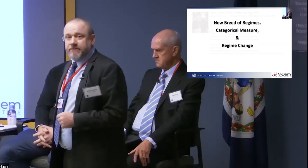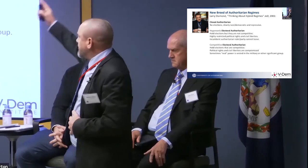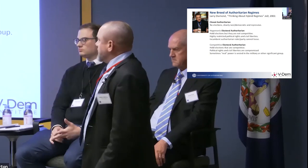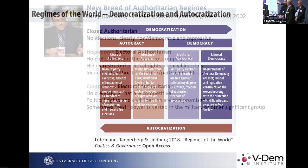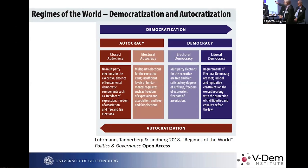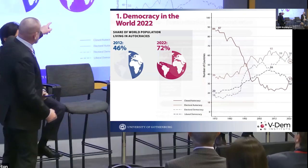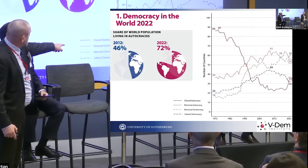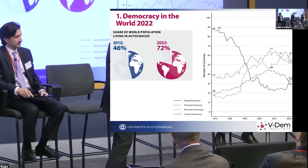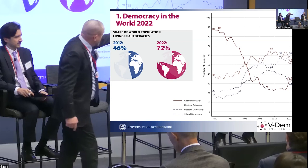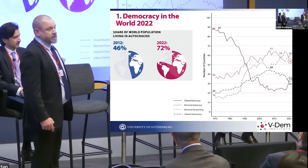Larry Diamond started the conversation about regime types, and Andrea Schedler and others have contributed. We measure those regime types with our Regimes of the World classification: closed autocracies, electoral autocracies, electoral democracies, and liberal democracies. Over the past 50 years since 1972, closed autocracies are going up again and liberal democracies are in steep decline.